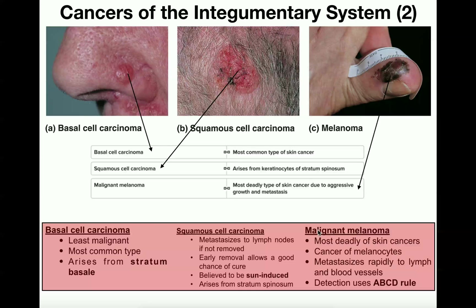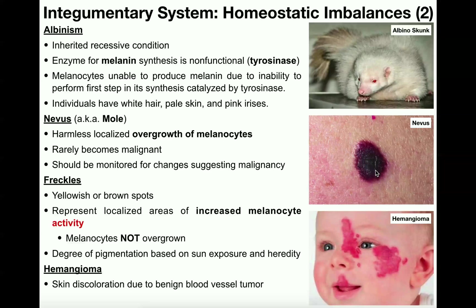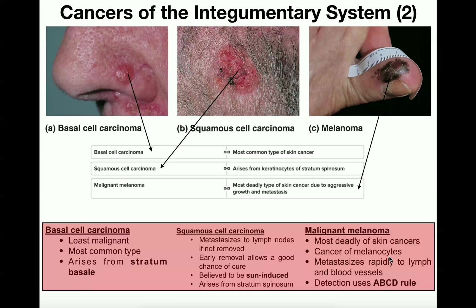The last type is a malignant melanoma, or simply melanoma — the name implies malignancy. These are the most dangerous of all skin cancers. They are cancers of the melanocytes, the cells that generate melanin in the stratum basale of the epidermis. A malignant melanoma can arise independently or from a pre-existing mole, also called a nevus. It metastasizes even more rapidly than squamous cell carcinomas — spreading through lymph nodes and blood vessels — and must be removed as soon as possible.